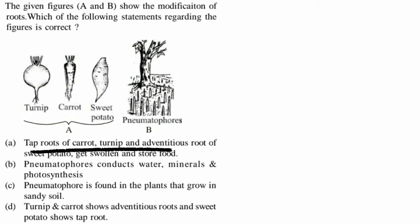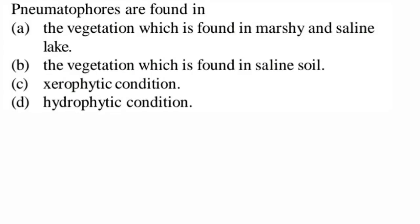Option B says pneumatophores conduct water, minerals, and perform photosynthesis — that is wrong; they are mainly for oxygen respiration. Option C says pneumatophores are found in plants that grow in sandy soil — wrong, they are found in mangrove conditions. Option D says turnip and carrot show adventitious roots and sweet potato shows tap root — also wrong. So option A is correct.